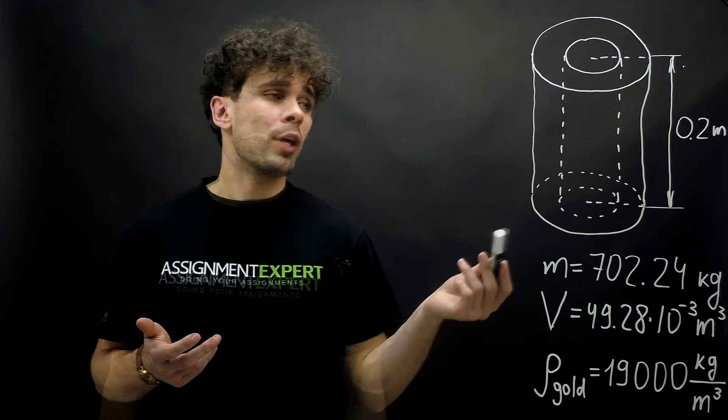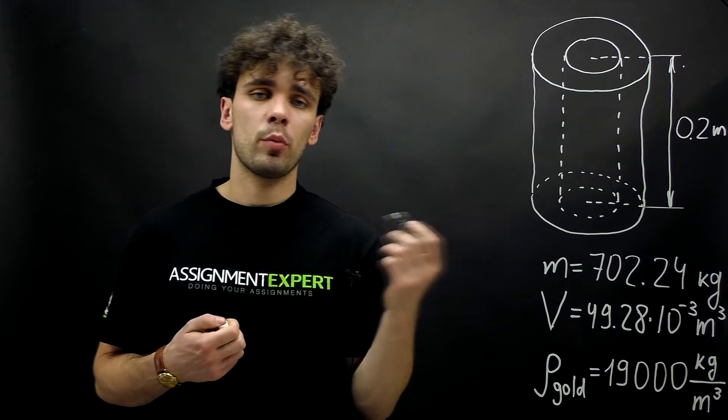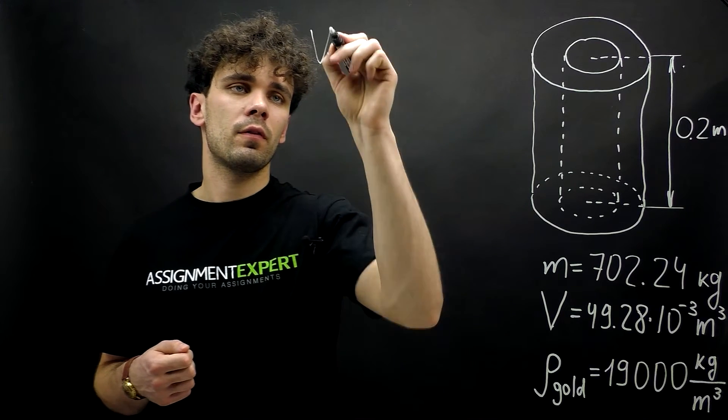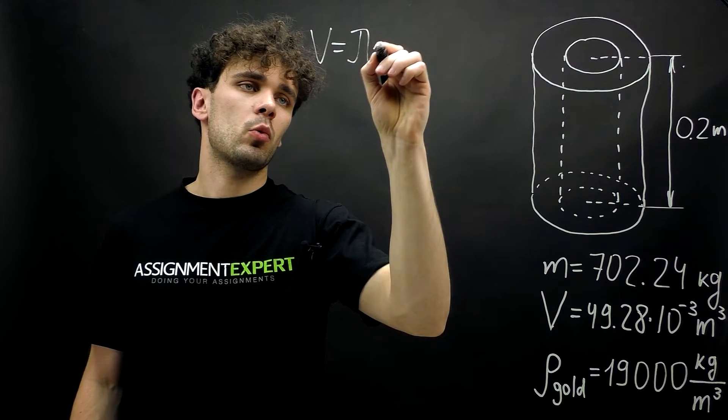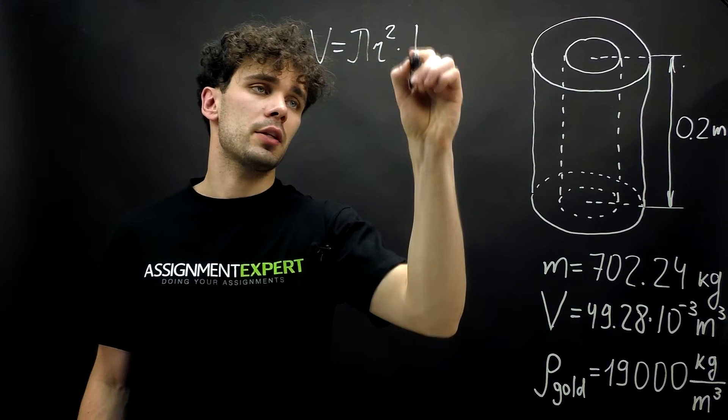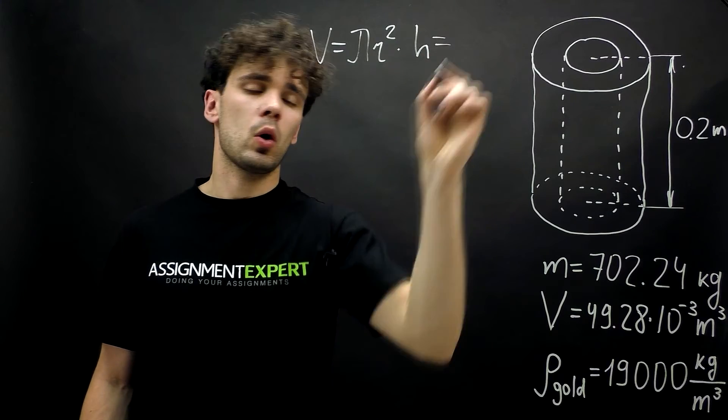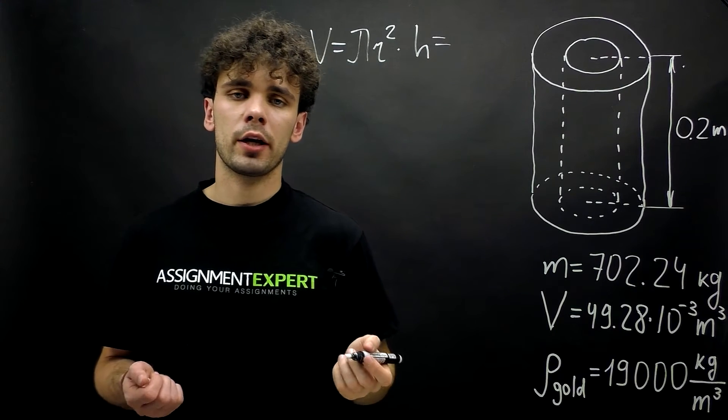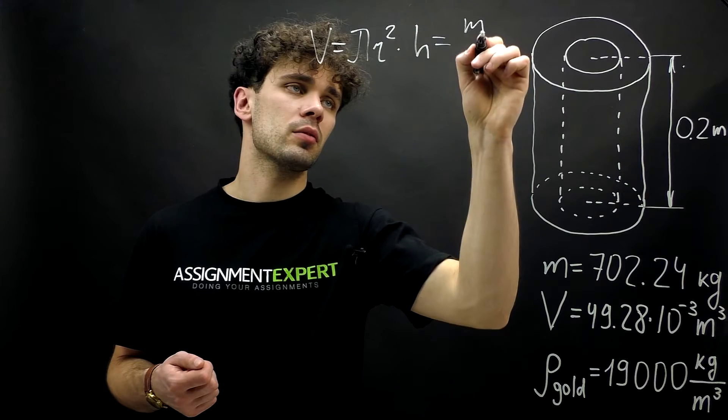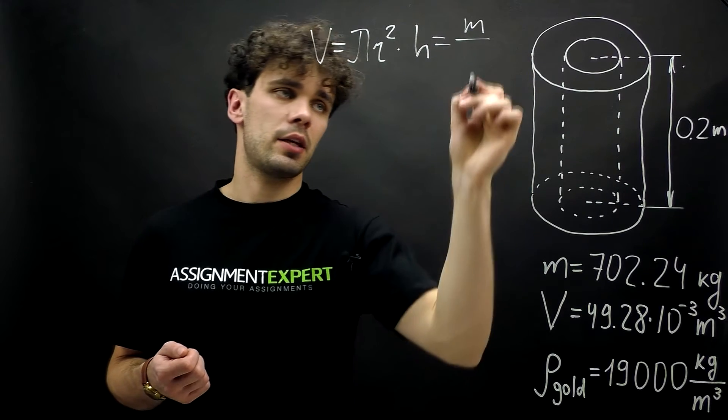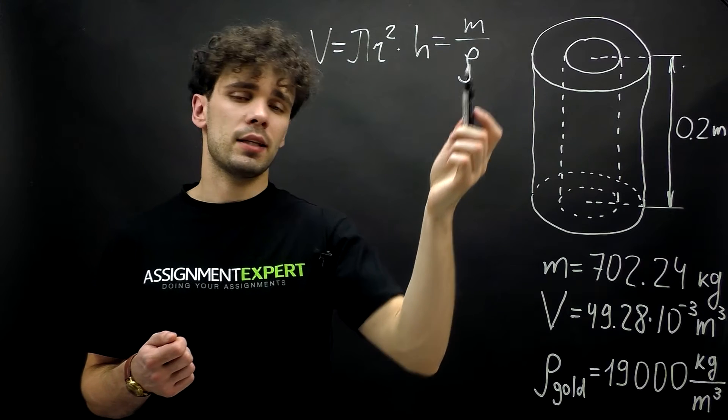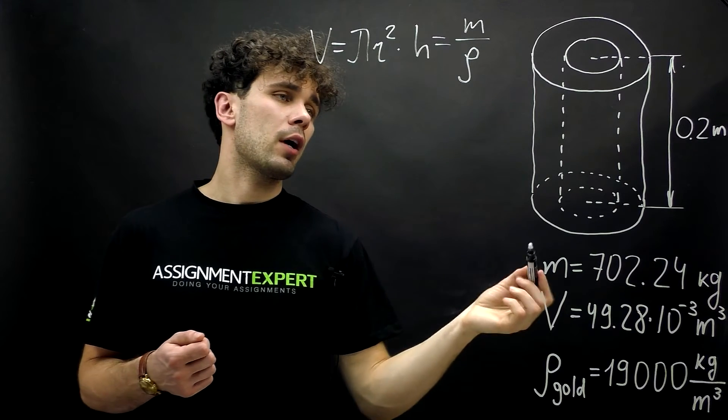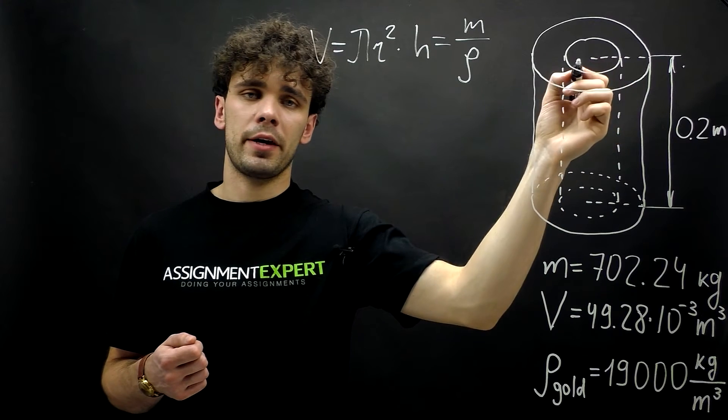Let's begin. We have a formula for the volume of the cylinder: V equals pi r squared times height. And also, the volume of any body can be found as its mass divided by its density. In our case, we have mass and density, so we can find the volume of the cylinder without the cavity.